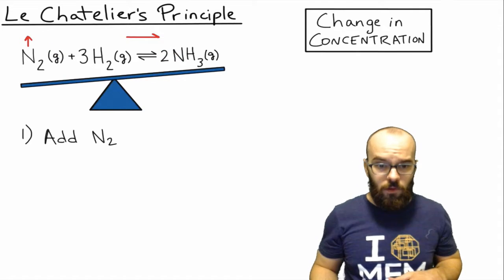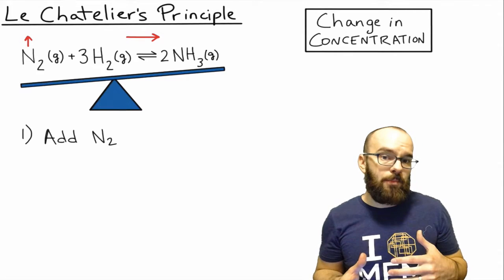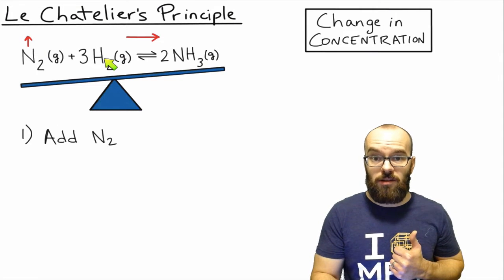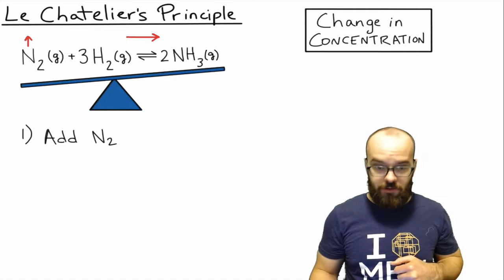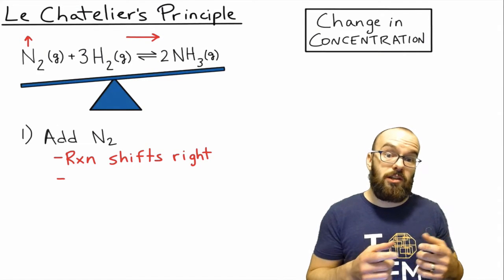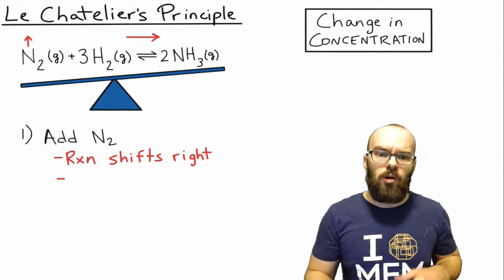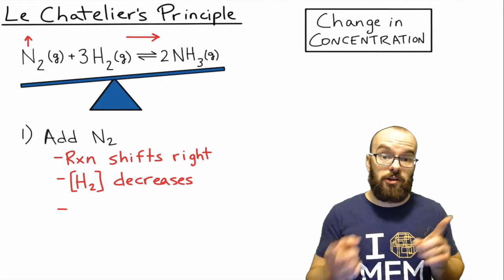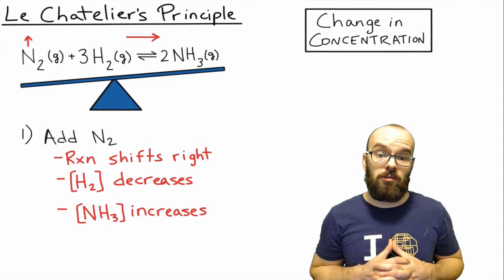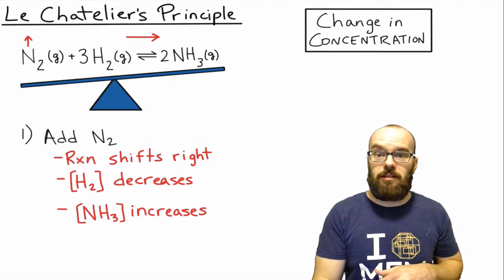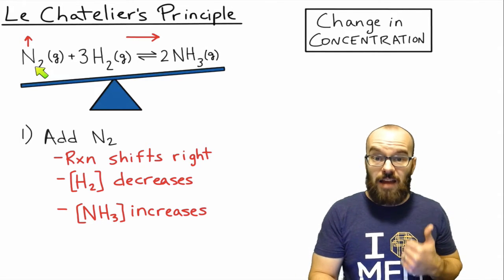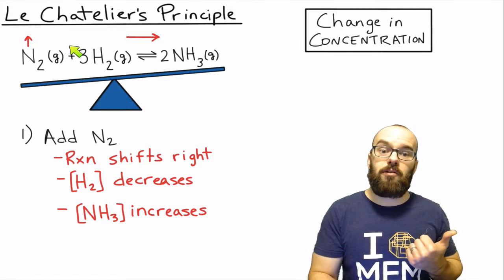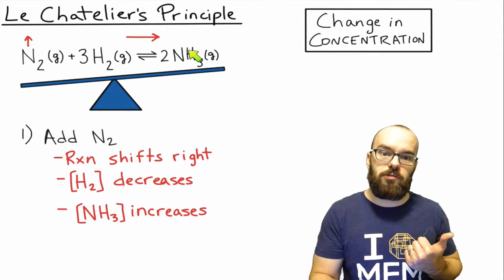The reaction shifts toward the right. What happens to concentrations? The hydrogen gas concentration will decrease because it's reacting with the excess nitrogen to produce more ammonia. The NH₃ concentration will increase. We predicted all of that using Le Chatelier's principle: adding more to the reactant side shifts to the product side, so H₂ goes down and NH₃ goes up.